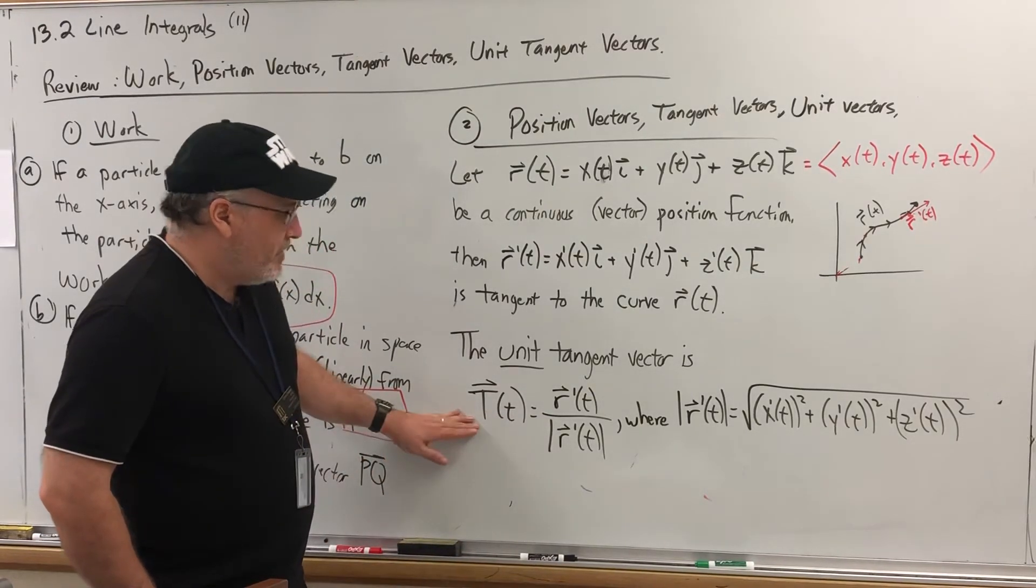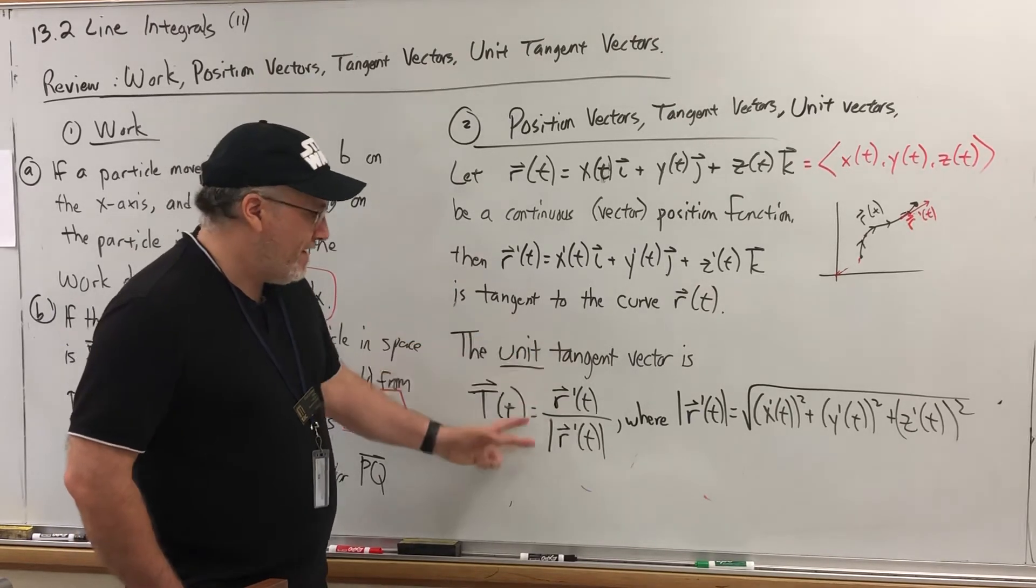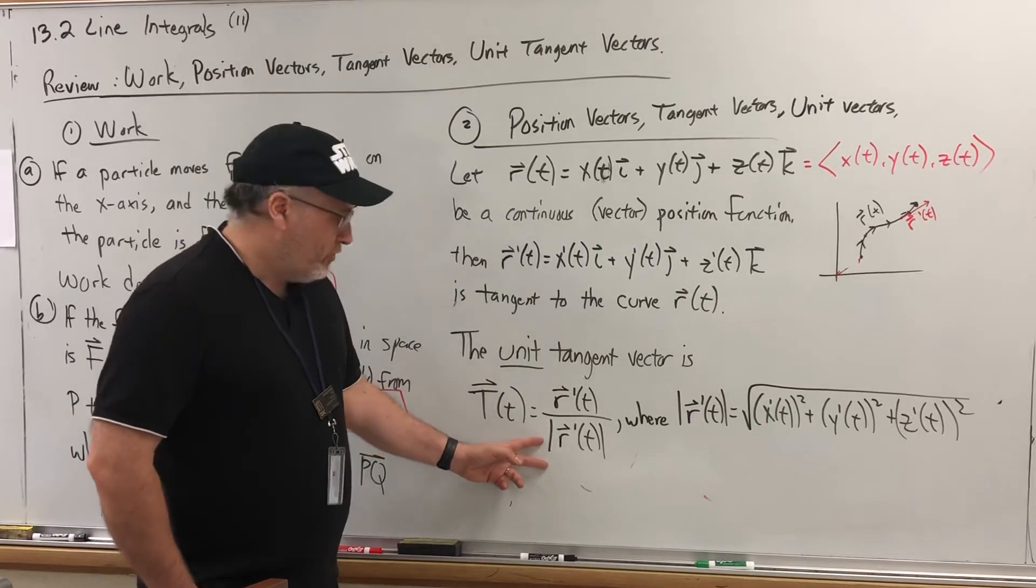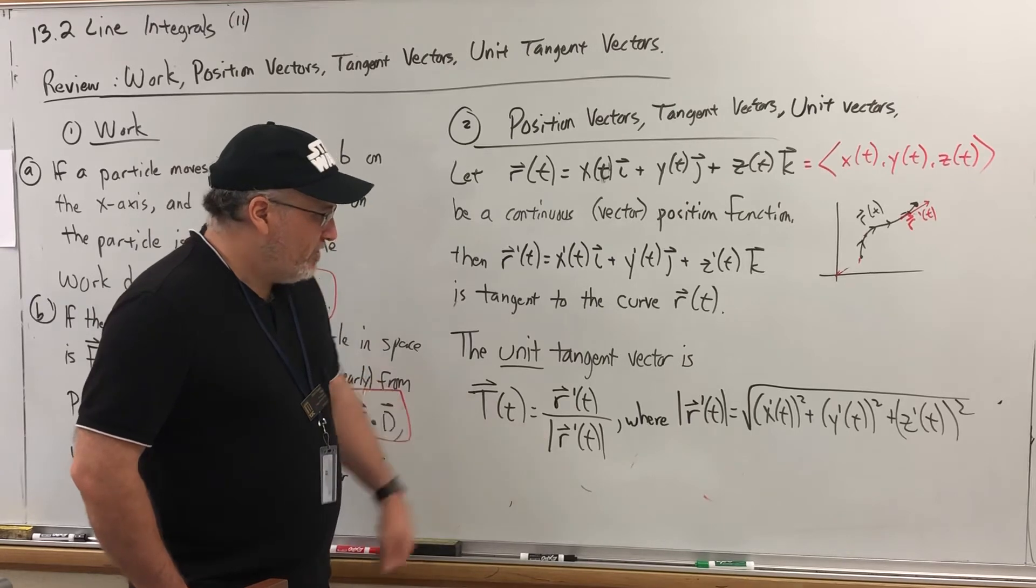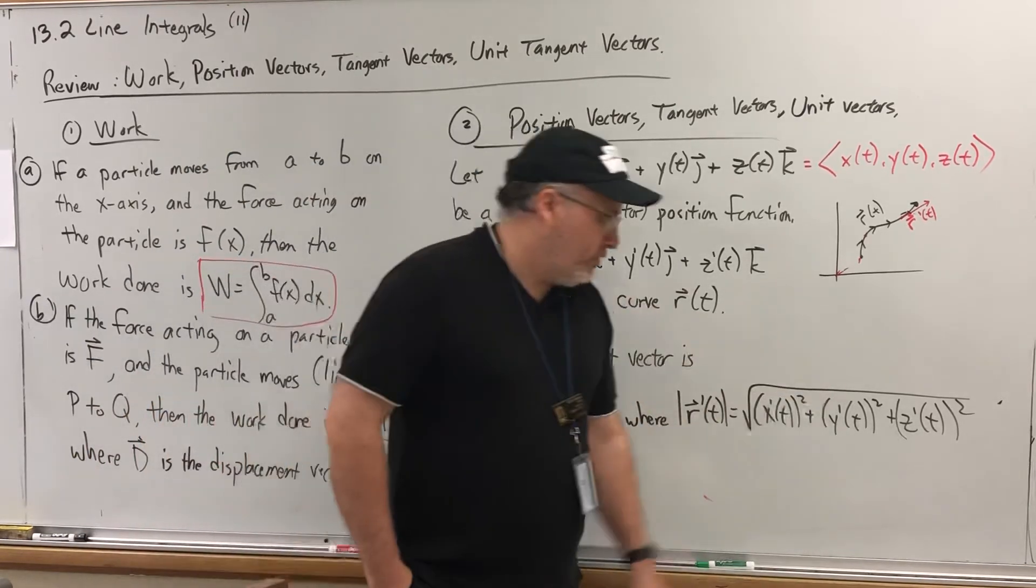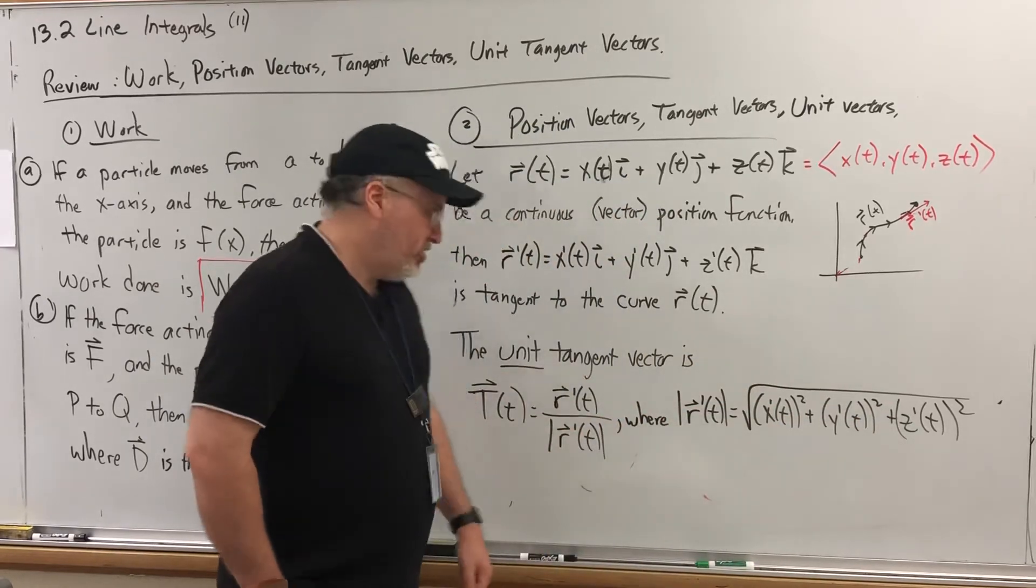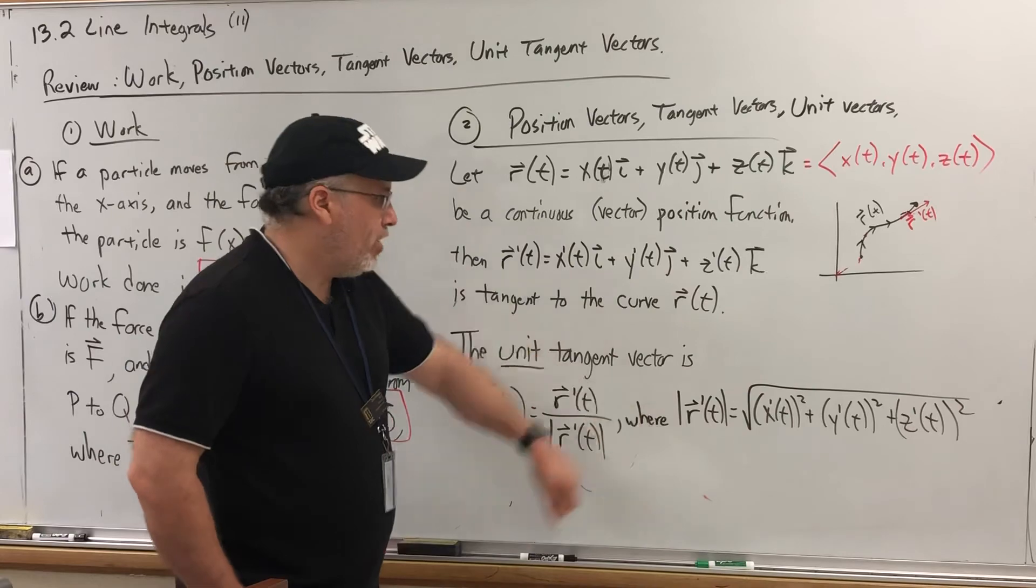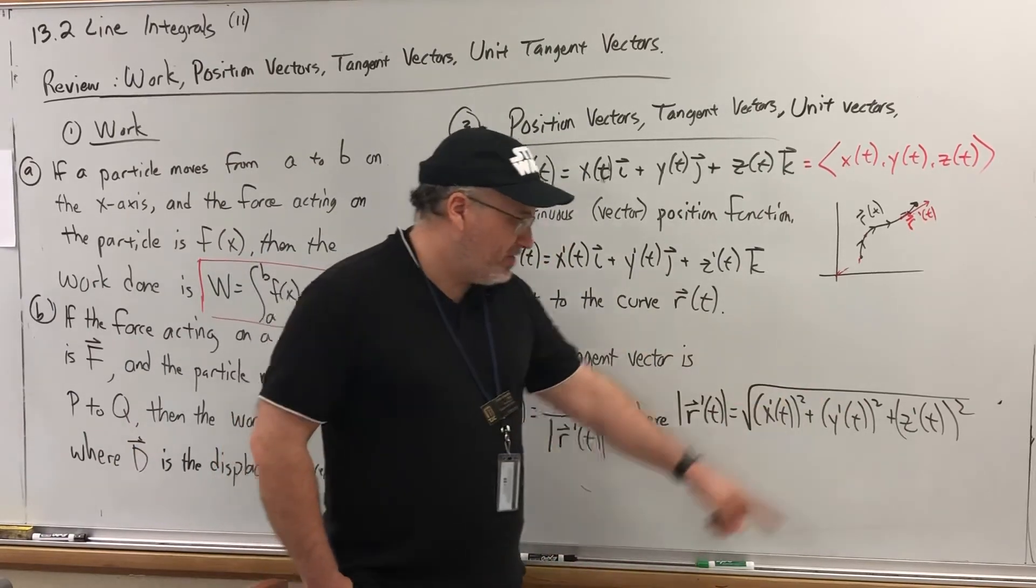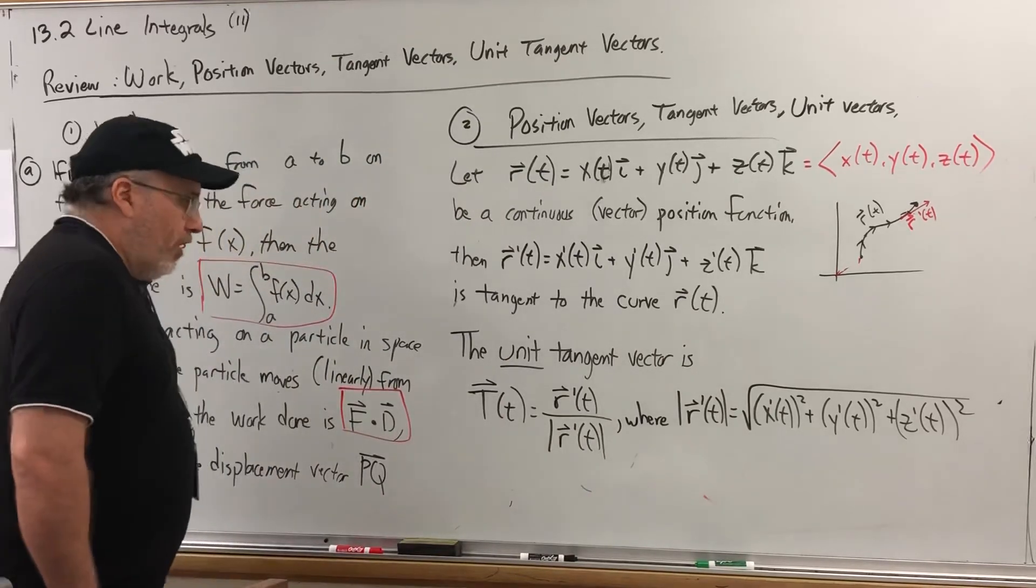So if we're going to find a unit tangent vector, then it's just the derivative of our position function divided by the magnitude of the derivative of the position function. And remember, to find the magnitude of a vector, it's the square root of the sum of the squares of its component functions. And since it's the derivative of R, then those component functions are the derivative of x, the derivative of y, and the derivative of z.